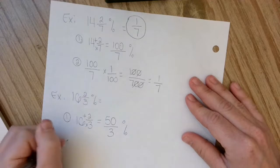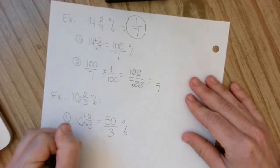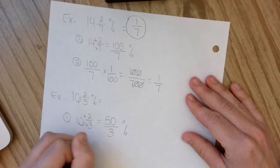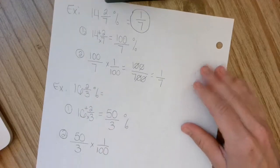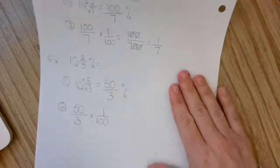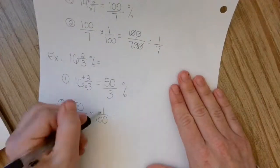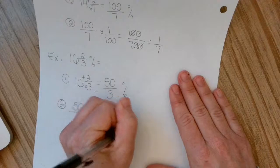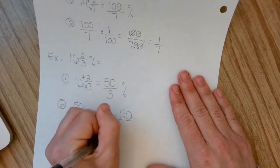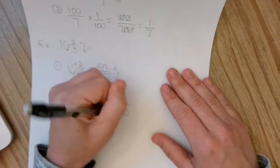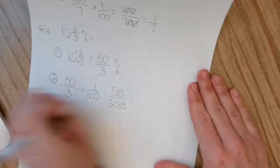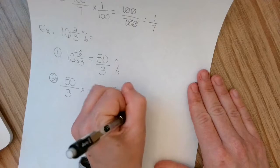And then I'm going to take that 50 over 3 and multiply it by 1 over 100. So then when I do that, 50 times 1 is 50. 3 times 100 is 300. I have some zeros that I can cross out.